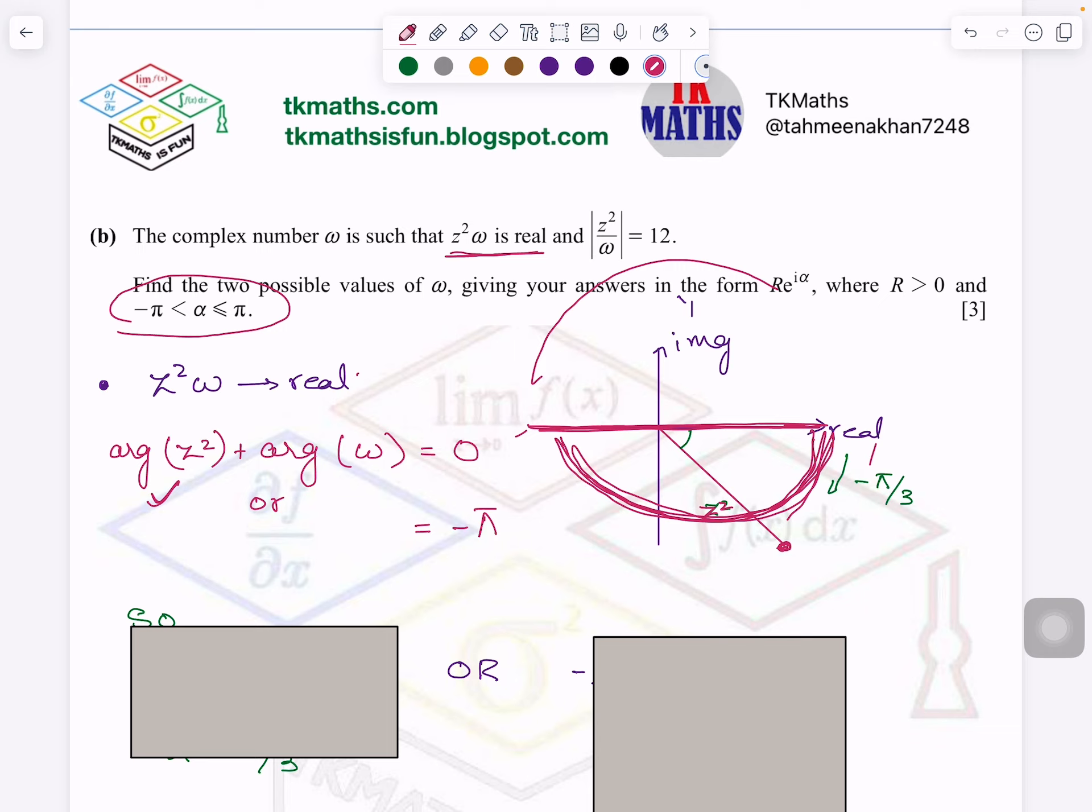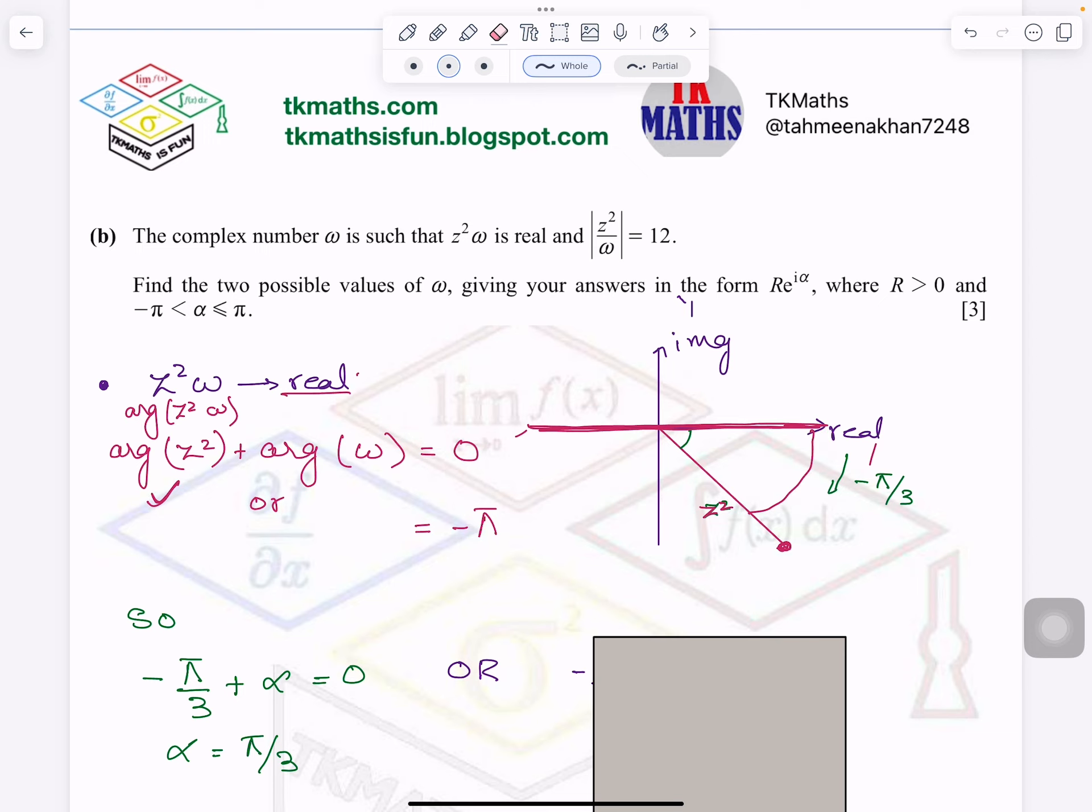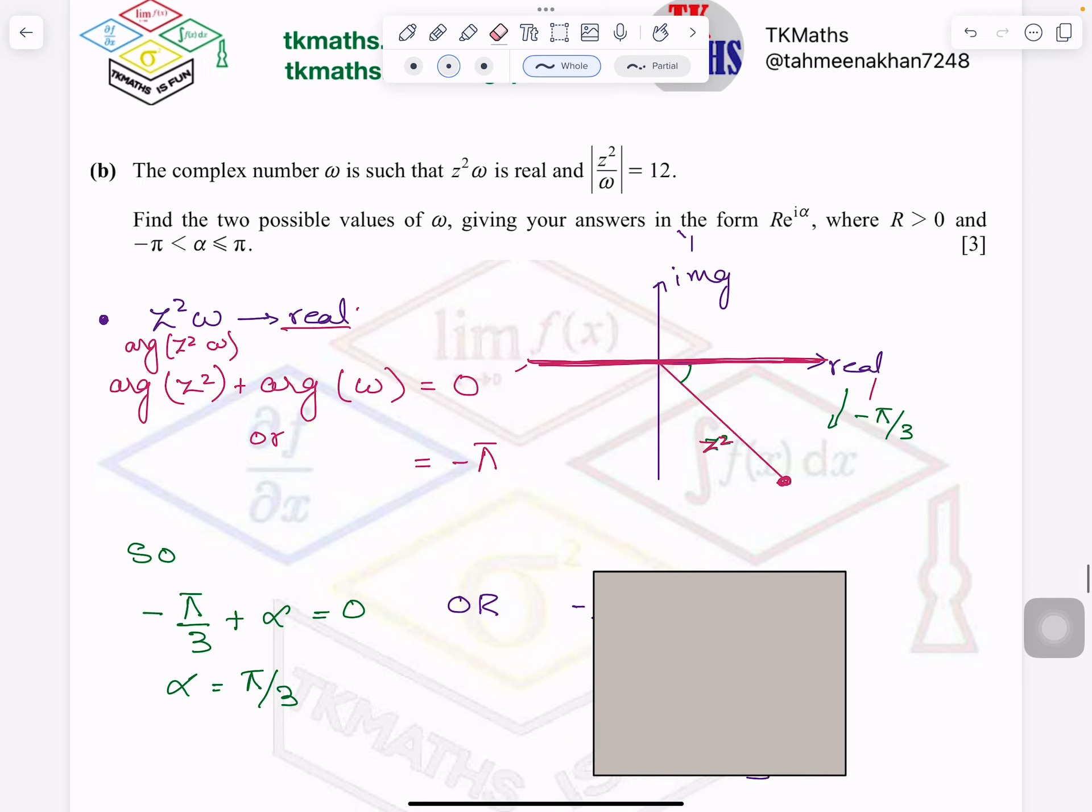So that's why I said, argument of Z square ω, if you write it like this, argument of Z square ω, and it is saying it is real number. So I will say, argument of Z square plus argument of ω equals 0 or minus π. So now let's see. Let me make it a little clean. It is so dirty now.